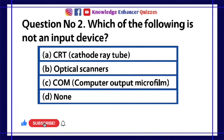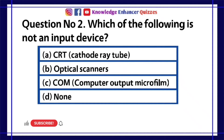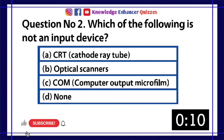Question number 2. Which of the following is not an input device? A. CRT, cathode ray tube. B. Optical scanners. C. COM, computer output microfilm. D. None.